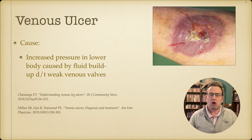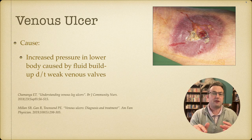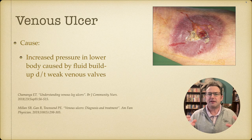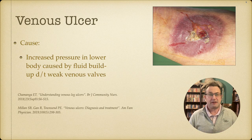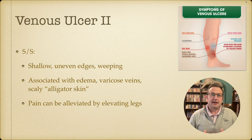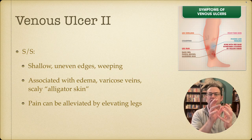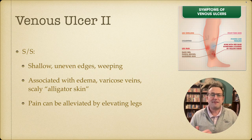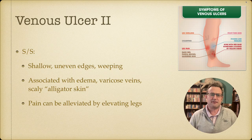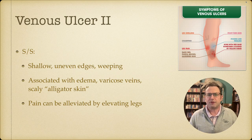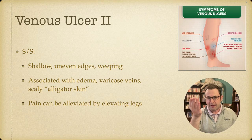The second type is venous ulcers, which are the exact opposite of arterial ulcers. Arterial ulcers mean blood can't get to a spot; venous ulcers mean blood can't get away from that spot. It builds up over time, causing damage to the veins and valves, and can eventually rupture. Signs and symptoms include shallow, uneven edges and weeping, associated with edema, varicose veins, and scaly 'alligator skin.' Pain can be alleviated by elevating the legs, which relieves that pressure and helps the flow.